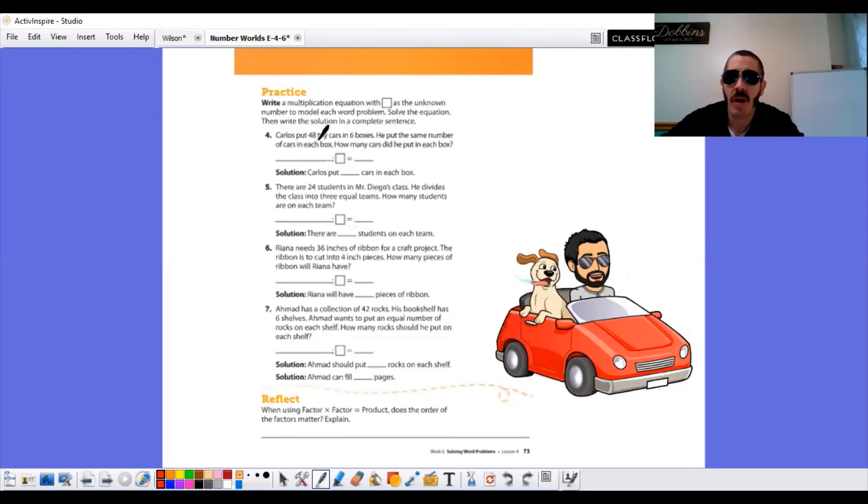For instance, number four says, Carlos put 48 toy cars in six boxes. So I know this is a division problem. I know it's a division problem that's saying 48 divided by six equals what? But I'm going to turn that into a multiplication sentence. I know that that total will be the answer to my multiplication problem. Six boxes represents the groups. How many go in each box or how many in a group is our unknown. So six times blank equals 48. And then you solve it. Figure out what that blank equals. Whatever goes here also goes there.